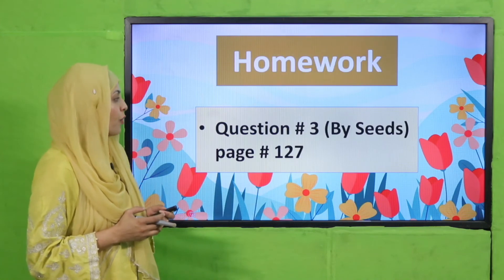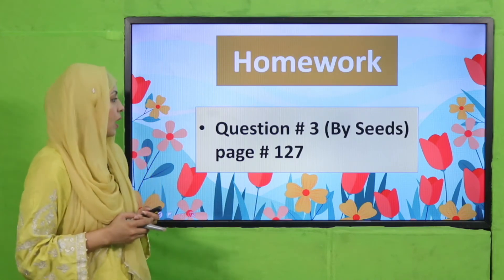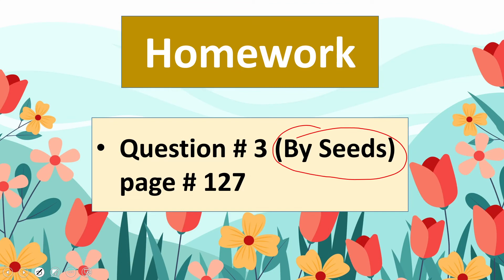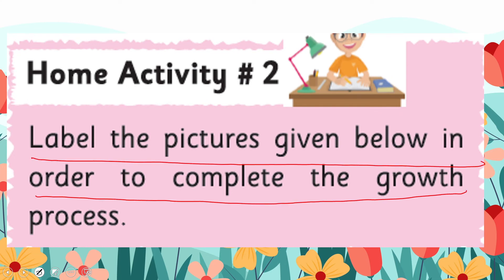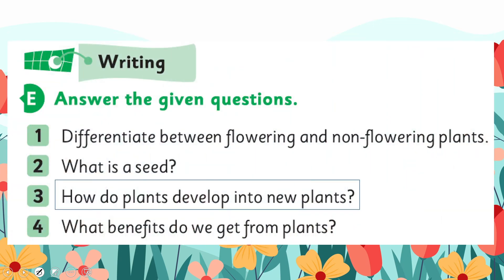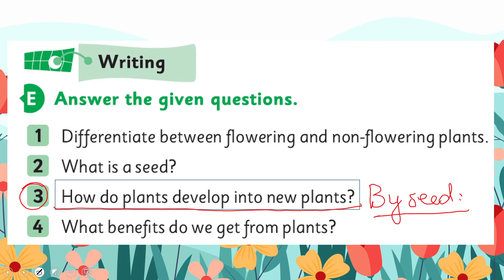For homework, you will do question number three — about development by seeds only — and home activity number two: label the pictures given below to complete the growth process. For question number three, you will discuss only one mode, which is by seeds, and write it down in your notebooks.